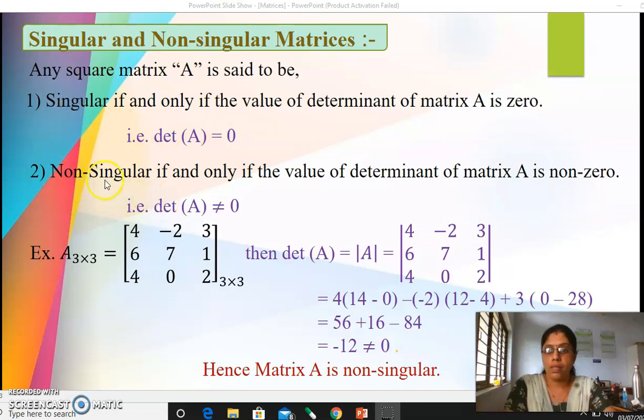And the second possibility is non-singular matrices. For non-singular matrices your determinant value should be non-zero. So if determinant A is non-zero we can say the matrix is non-singular.